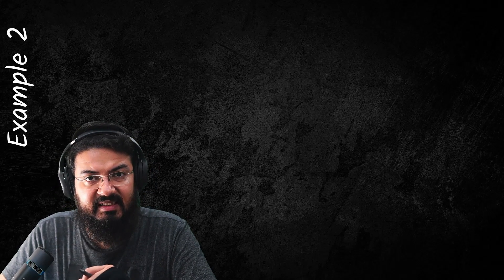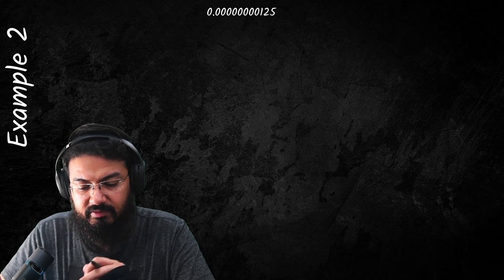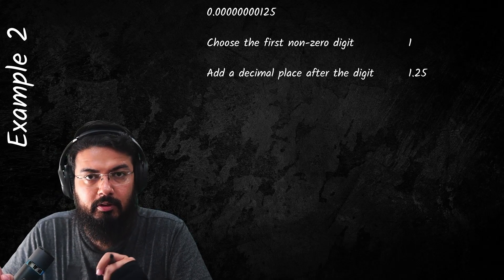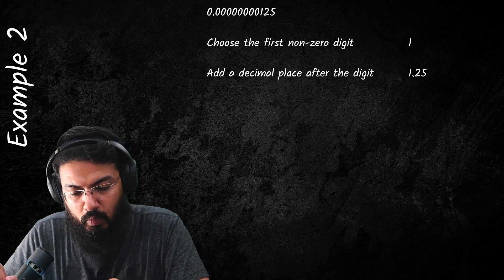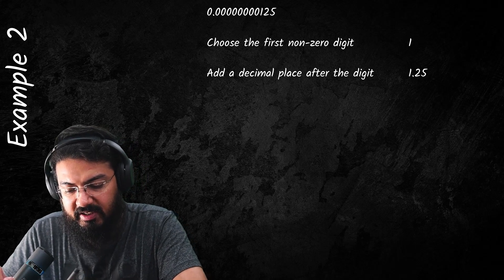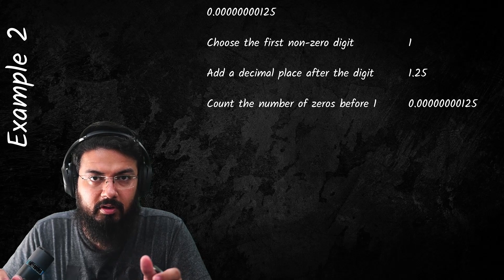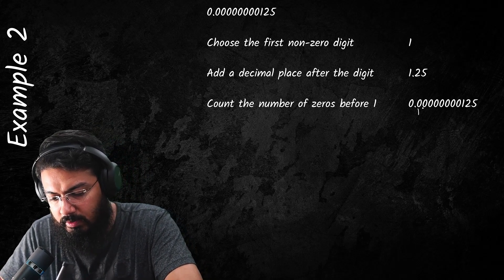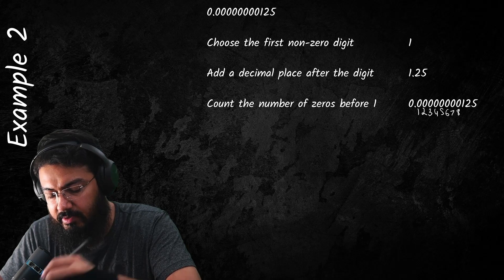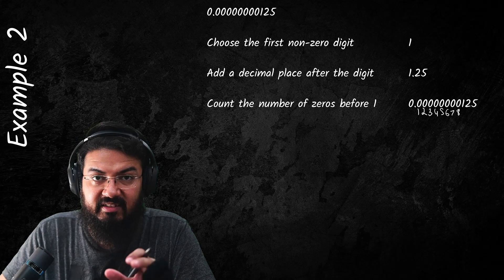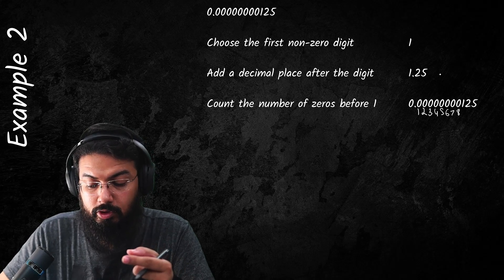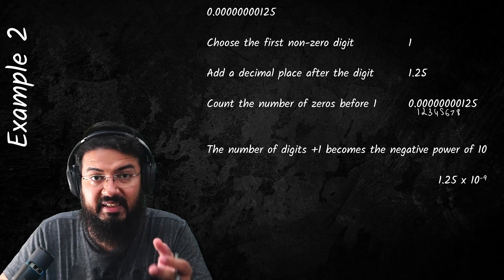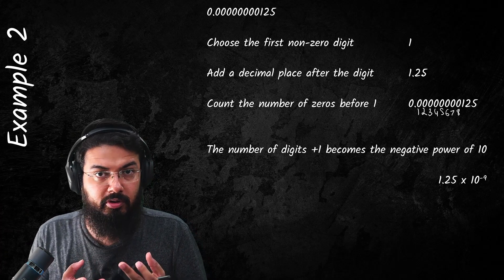Now for a very small value: take 0. followed by several zeros and then 125. Choose the first non-zero digit, which is 1, and place the decimal point after it to get 1.25. Then count the number of zeros before the 1 — there are 1, 2, 3, 4, 5, 6, 7, 8 zeros. For small numbers, add 1 to the count of zeros, giving 9, so the final answer is 1.25 × 10⁻⁹.